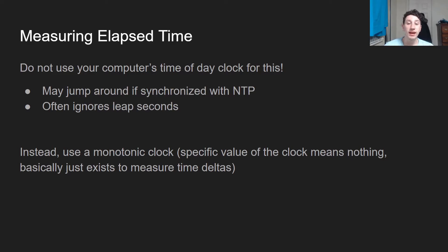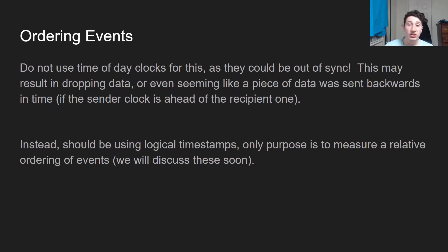As a result, instead, we should really just be using a monotonic clock. A monotonic clock is basically just a counter on a computer that goes up a second at a time, and that way you can easily see how many elapsed seconds there were between two events happening. Additionally, ordering events — this was kind of the main motivation behind using timestamps in distributed computing: we want to say what happened first, and use the timestamps to do so.